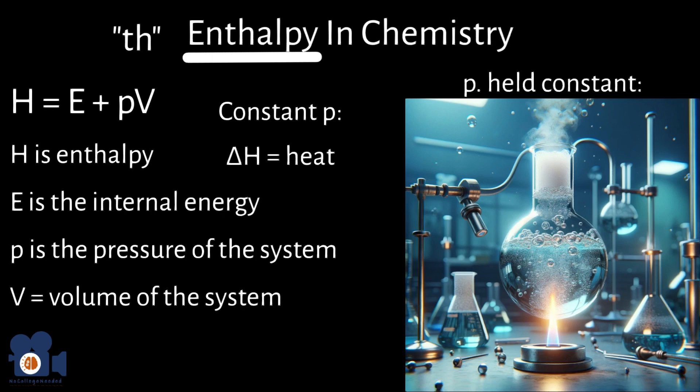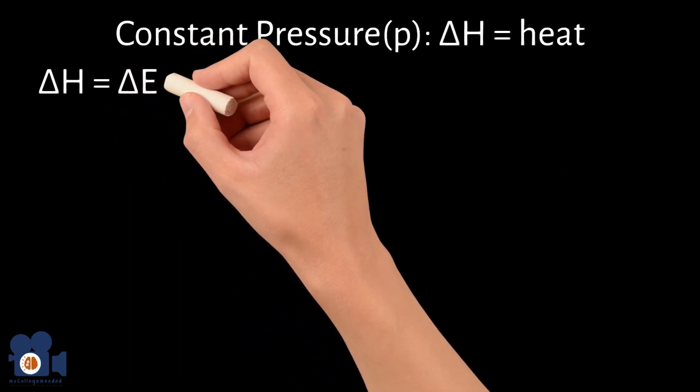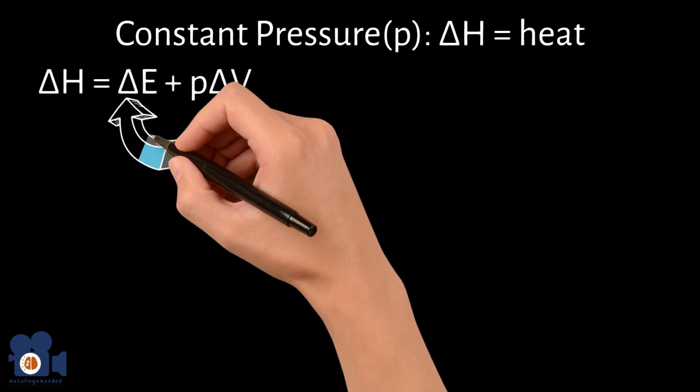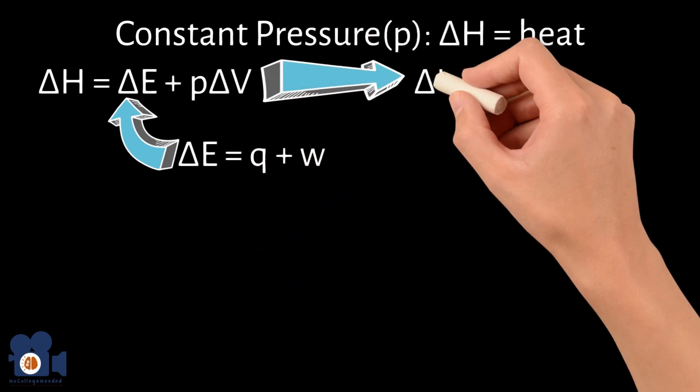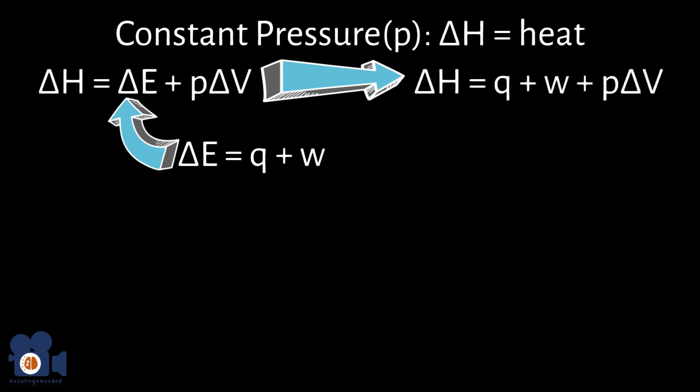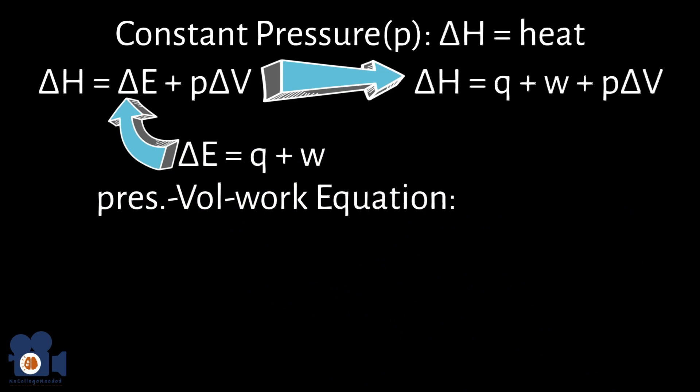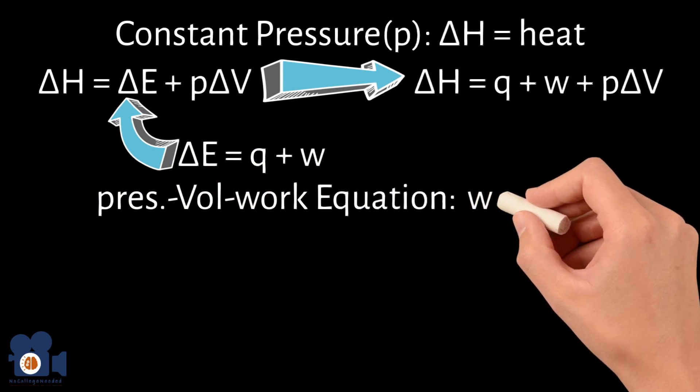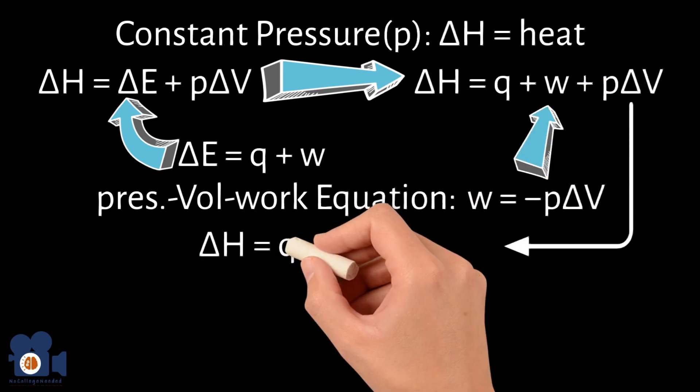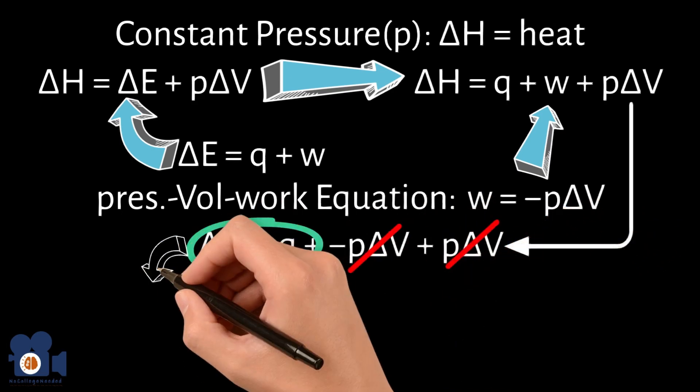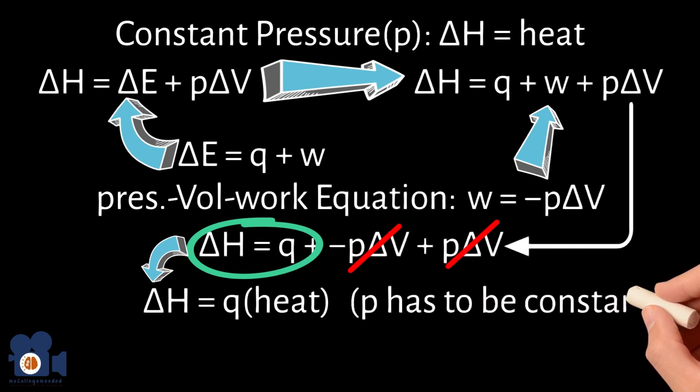Let's prove this through some equations. The equation when pressure is constant is delta H equals delta E plus P delta V. When we insert our previous equation of delta E into this, we get delta H equals heat plus work plus P times delta V. According to the pressure volume work equation, which relates the work done by or on a system during a volume change under pressure, W equals negative P times delta V. Plugging this into the delta H equation, we just get delta H equals Q heat. So the change in enthalpy is heat. However, pressure has to be constant.